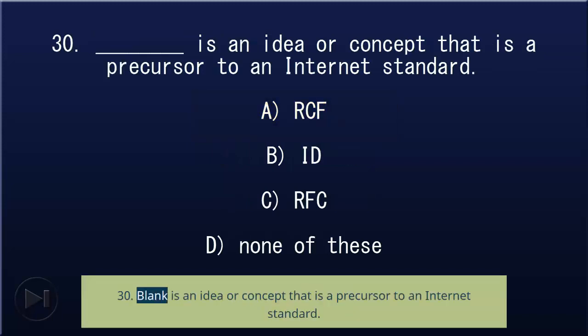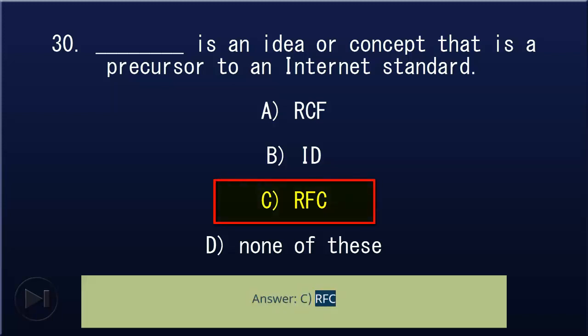30. Blank is an idea or concept that is a precursor to an Internet standard: A) RFC, B) ID, C) RFC, D) none of these. Answer: C, RFC.